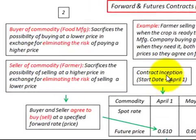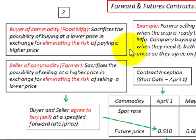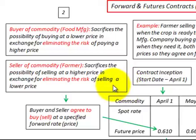At the contract inception — the start date — the buyer and seller agree to buy and sell at a specified forward rate or forward price. The buyer of the commodity, the food manufacturer, sacrifices the possibility of paying a lower price in exchange for eliminating the risk of paying a higher price. The seller, the farmer, sacrifices the possibility of selling at a higher price in exchange for eliminating the risk of selling at a lower price.